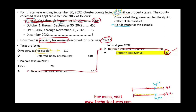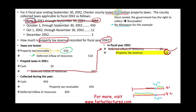From October through September we collected $450 million — that's within the fiscal year. When we collect money, we debit cash and credit the receivable we set up. We then debit deferred inflow of resources for $450 million and credit property tax revenue $450 million. So far we have $450 million plus $20 million of revenue.